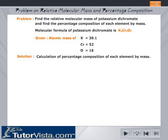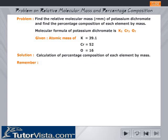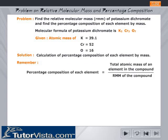We now move on to calculations of percentage composition of each element by mass. Remember, percentage composition of each element is equal to the total atomic mass of an element in the compound divided by the RMM of the compound.